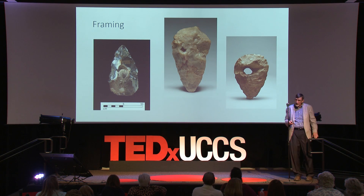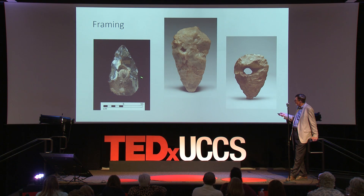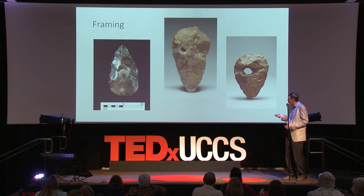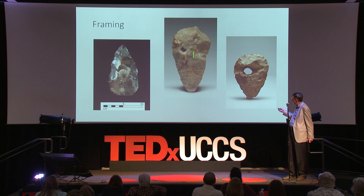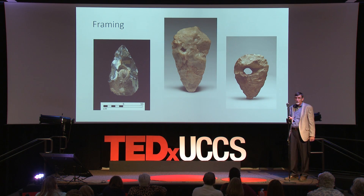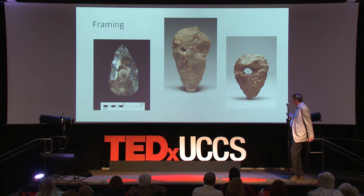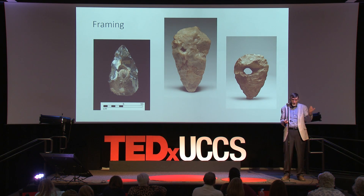We also see something we call framing: they use hand axes to focus attention on certain objects. This one's pretty obvious — there's a shell in the middle, and whoever made this chipped around the shell. Clearly they're drawing attention to it. French neuroaestheticist Changeux argues that ambiguity is a very important part of aesthetic experience, and if you look at this object long enough you can begin to see the face — there's an eye here, the nose is here, the mouth is here.